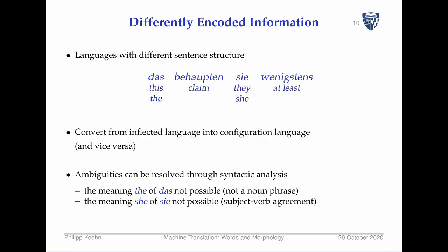There's also the problem of differently encoded information. Morphology's key feature is clarifying the relationship of words to each other in a sentence, but this can also be done by word order. Translating from a language that uses mostly inflections into a configurational language that primarily uses word order to clarify relationships creates a significant problem.